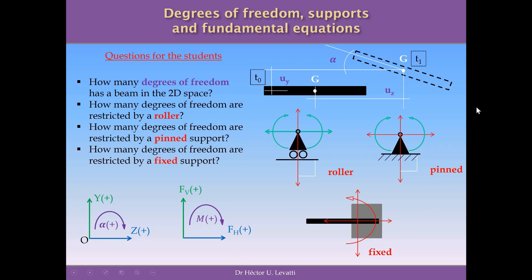As a summary of these important concepts: a beam in the two-dimensional space has three degrees of freedom — two displacements (horizontal and vertical) and one rotation. A roller restricts one degree of freedom: vertical displacement. A pin support restricts two degrees of freedom: horizontal and vertical displacement. A fixed support restricts three degrees of freedom. We also follow the conventions for displacements, rotations, forces, and moments defined earlier.